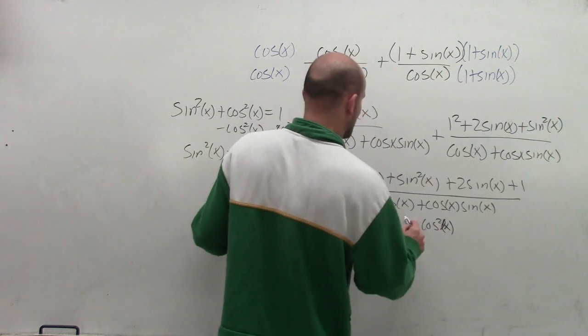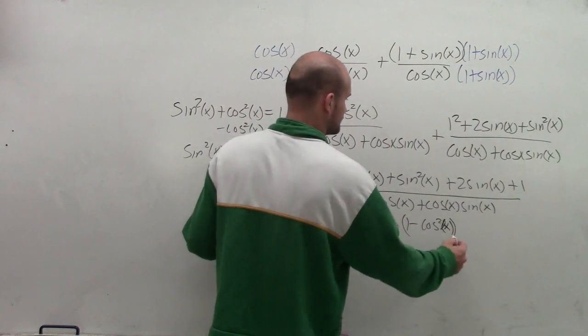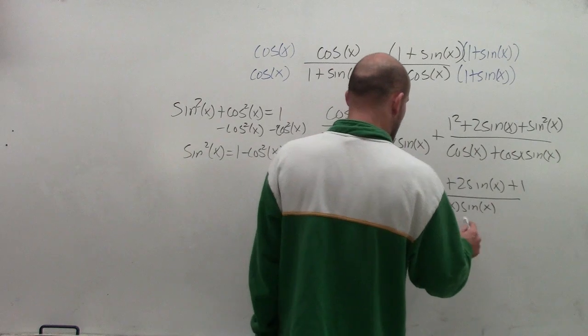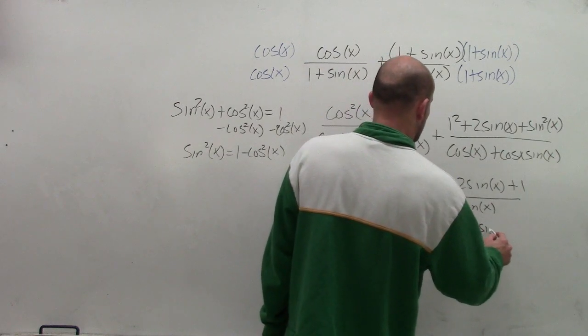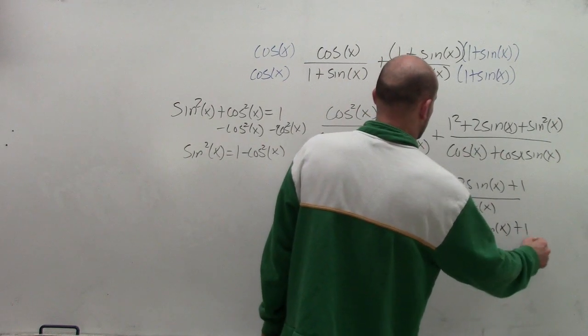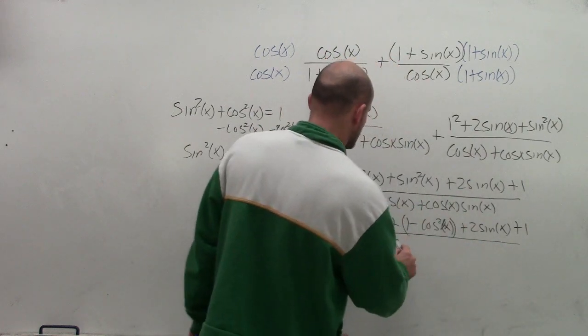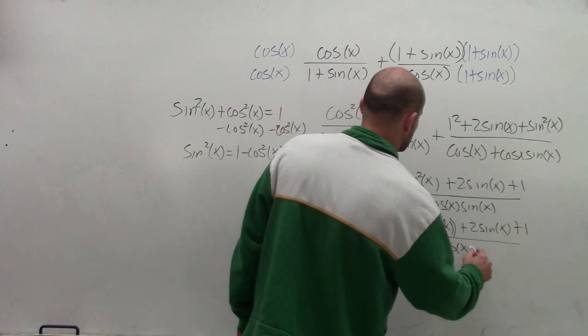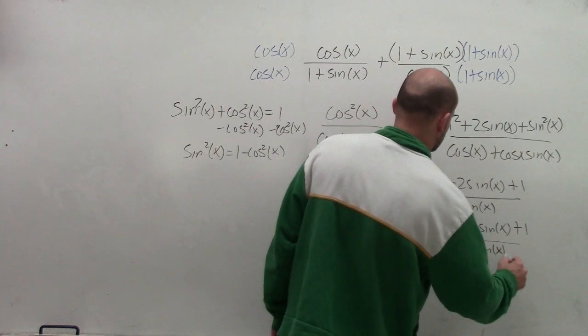So when I plug that in, you notice that now I'm going to have a positive cosine and a negative cosine of x squared. So plus 2 sine of x plus 1. And then again, this is all over my denominator, which is cosine of x plus cosine of x sine of x.